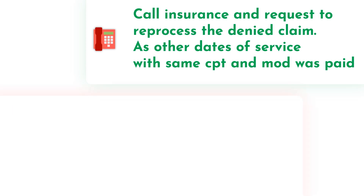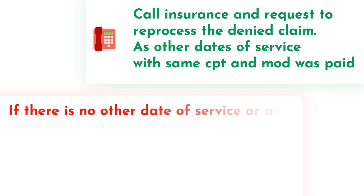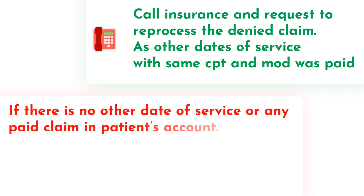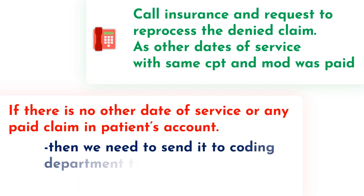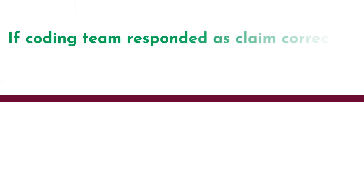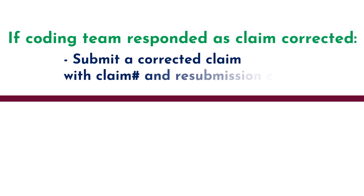If we find that there is no other date of service or any paid claim in the patient's account, then we need to send it to the coding department to review the claim. If the coding team responds that the claim was corrected, submit a corrected claim with the claim number and submission code 7.